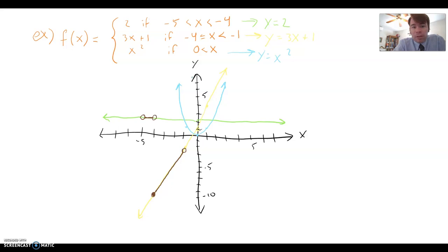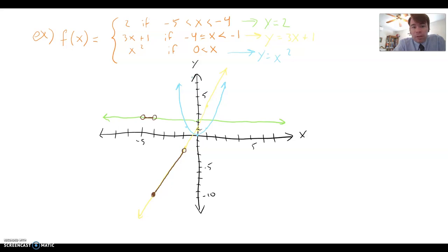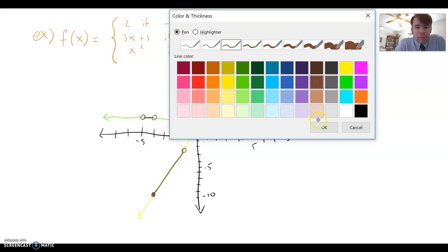But again, we're not keeping the whole parabola. We're just keeping the part where x is greater than 0. So to do that, we're going to start at 0. And that gets an open circle because it says greater than. And we're going to keep the part to the right, the part where x is greater than 0.